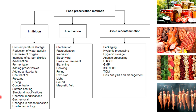Freezing, concentrating, and drying-like methods can be used for inhibition. Sterilization, pasteurization, and irradiation-like methods can be done to inactivate microorganisms. Enzymes, HACCP, and good manufacturing methods can be used to avoid recontamination.